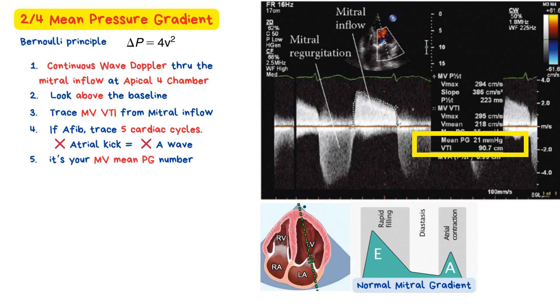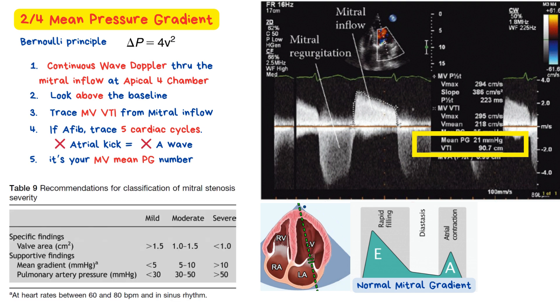We have an example on the right where the mean pressure gradient across the mitral valve is 21 mmHg — that value falls into the severe mitral stenosis range. Note that a mean gradient less than 5 is considered mild, between 5 and 10 is moderate, and anything greater than 10 is generally classified as severe. And that wraps up our deep dive into mean pressure gradient, the second of the four essential Level 1 ASE recommendations for assessing mitral stenosis.